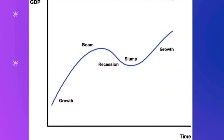Now let's look at the business cycle, which has four stages: growth, boom, recession, and slump. Growth is when GDP is rising — production of goods and services is increasing, unemployment is falling, and living standards are high. Boom is when there is a lot of spending in the economy, prices rise too quickly causing high inflation, and this results in high costs for businesses.